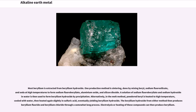Most beryllium is extracted from beryllium hydroxide. One production method is sintering, done by mixing beryl, sodium fluorosilicate, and soda at high temperatures to form sodium fluoroberyllate, aluminium oxide, and silicon dioxide. A solution of sodium fluoroberyllate and sodium hydroxide in water is then used to form beryllium hydroxide by precipitation. Alternatively, in the melt method, powdered beryl is heated to high temperature, cooled with water, then heated again slightly in sulfuric acid, eventually yielding beryllium hydroxide. The beryllium hydroxide from either method then produces beryllium fluoride and beryllium chloride through a somewhat long process. Electrolysis or heating of these compounds can then produce beryllium.